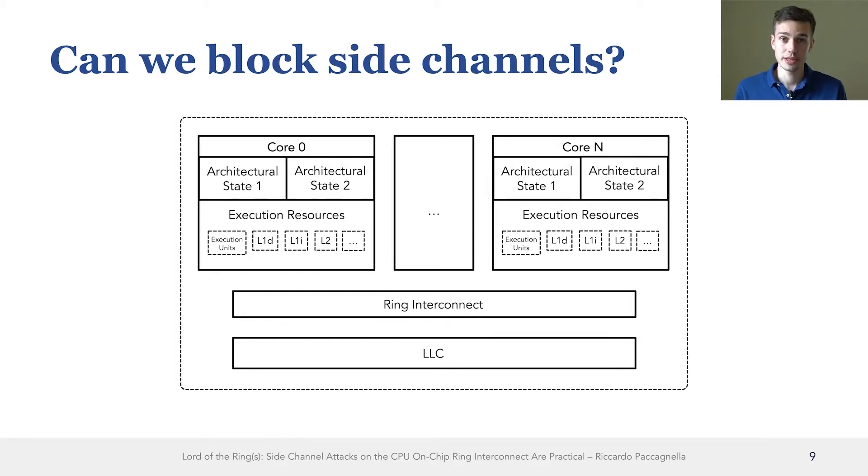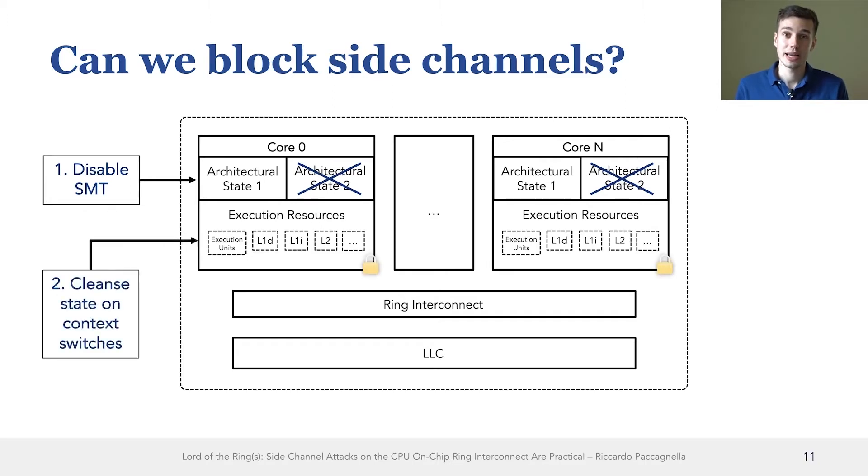The first one is to disable simultaneous multithreading across security domains. The second one is that we can cleanse the microarchitectural state across context switches. And the third one is that we can partition the shared last-level cache.